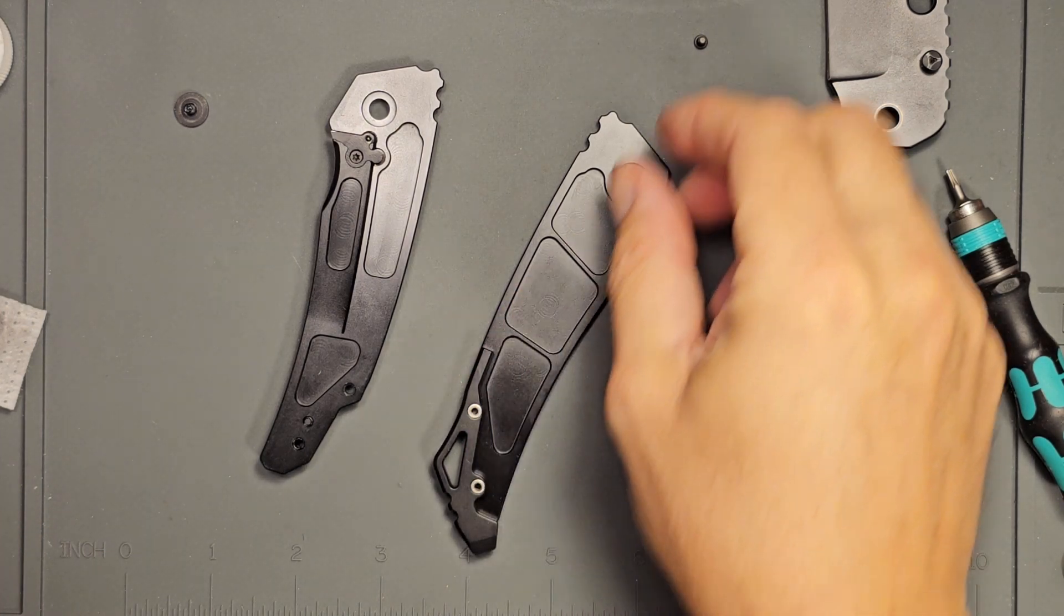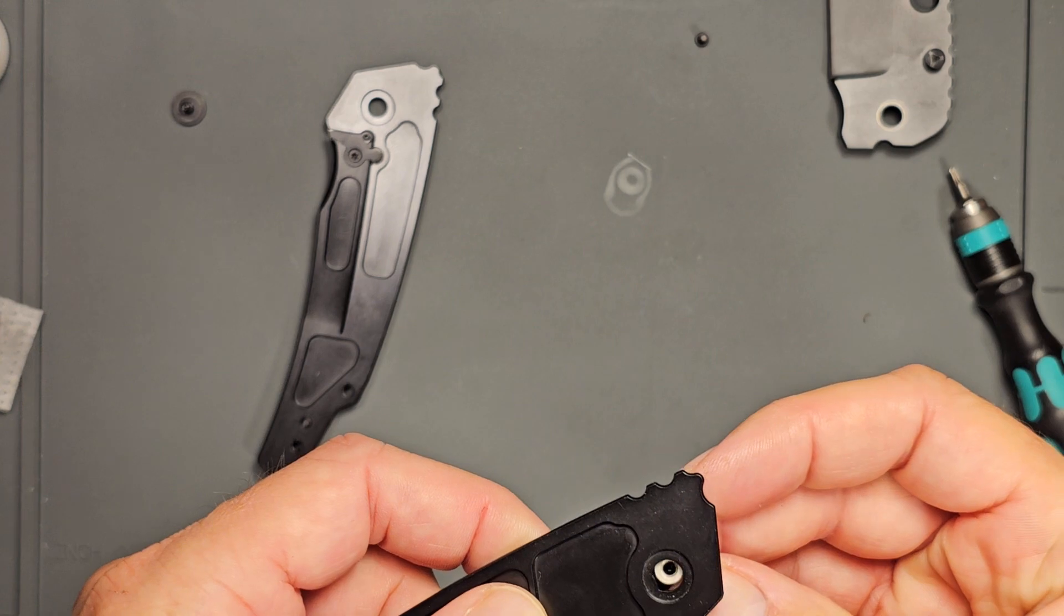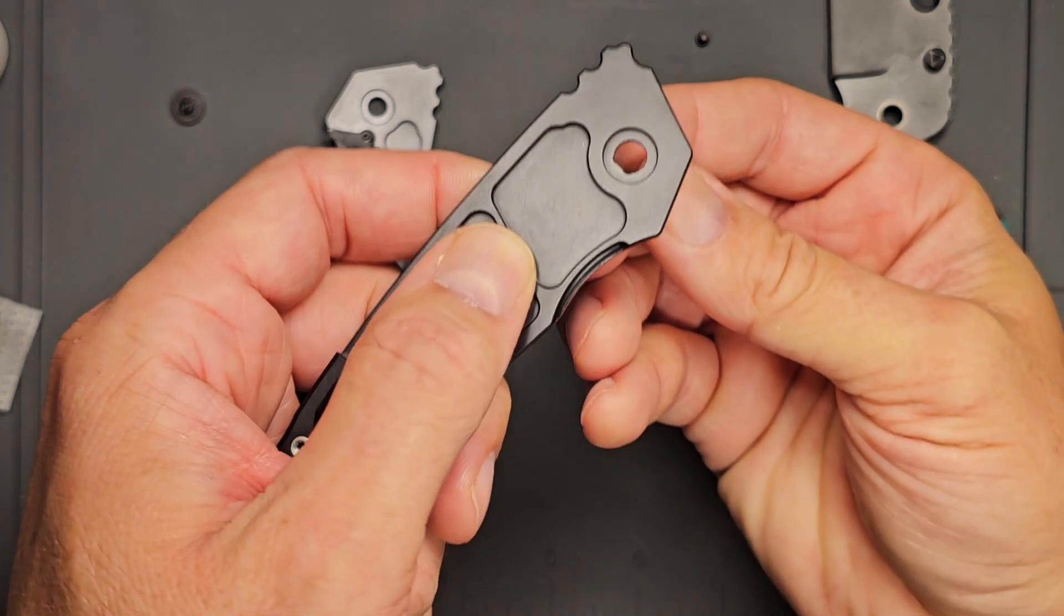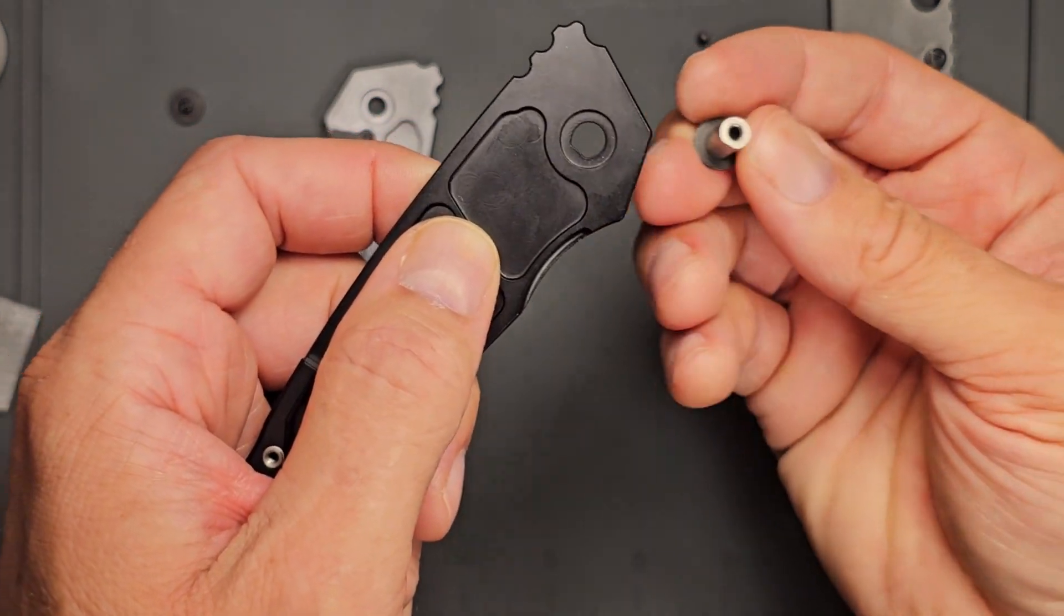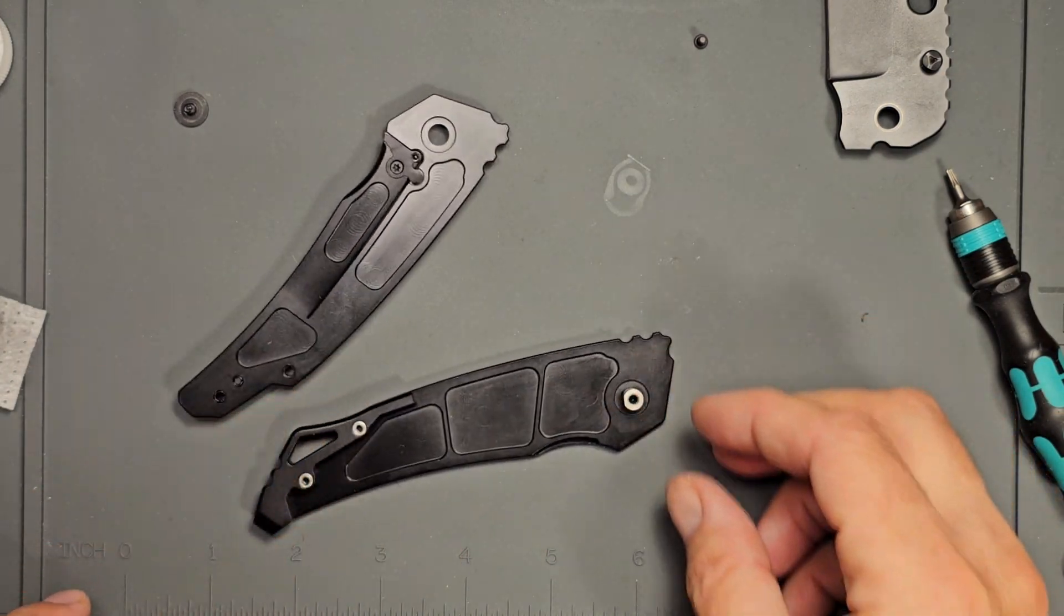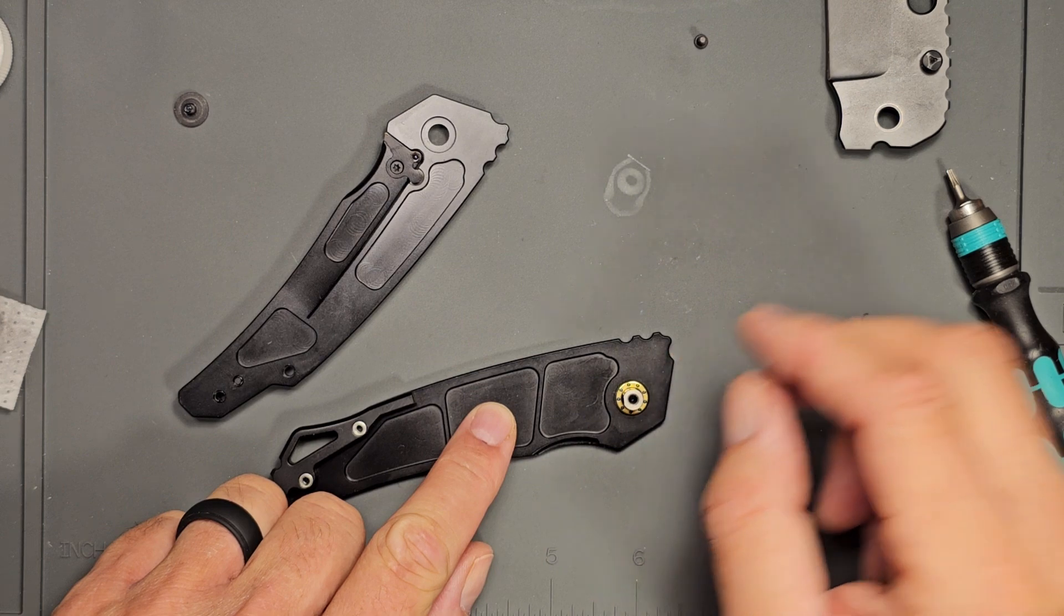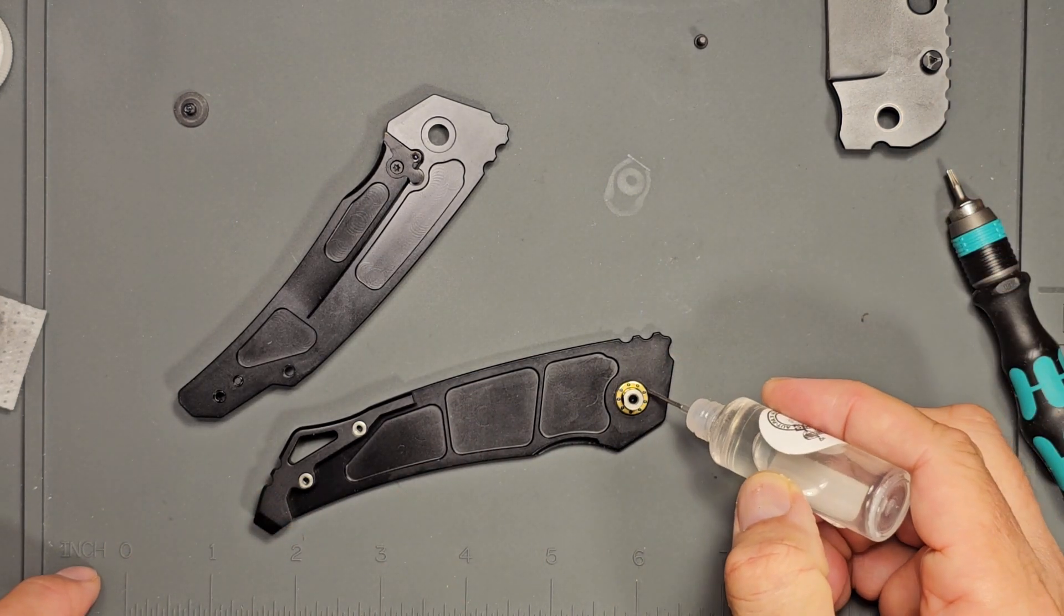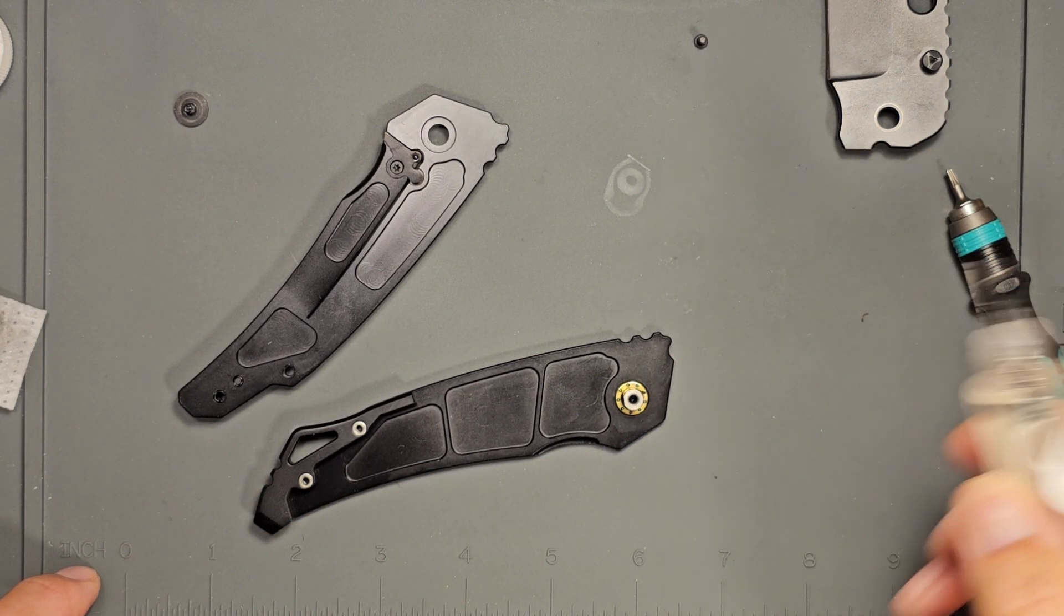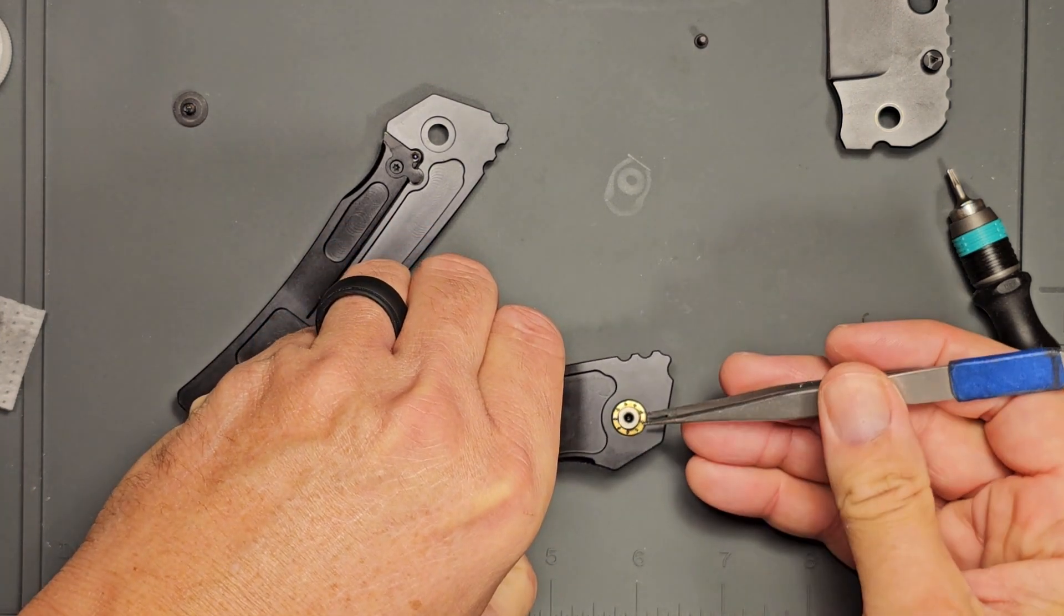All right, let's go ahead and get this back together. A D-shaped pivot hole there and a D-shaped pivot just slides right in like so. We will go ahead and put that bearing on. Well, hang on a second. We got ahead of ourselves here.